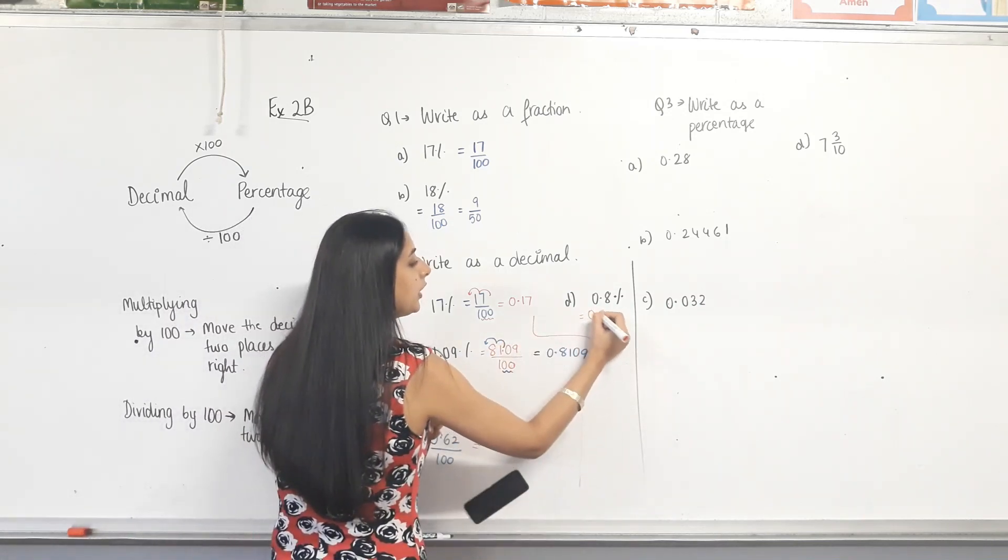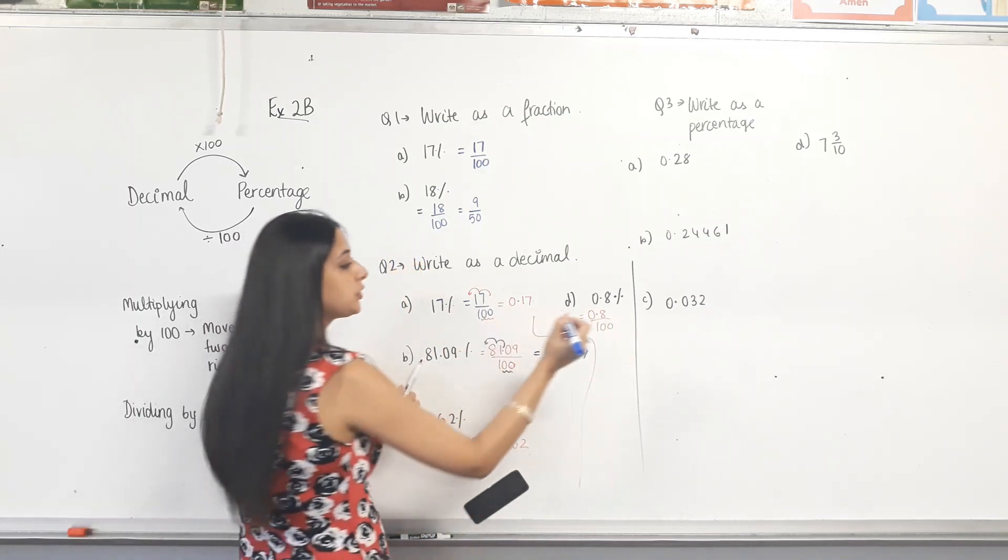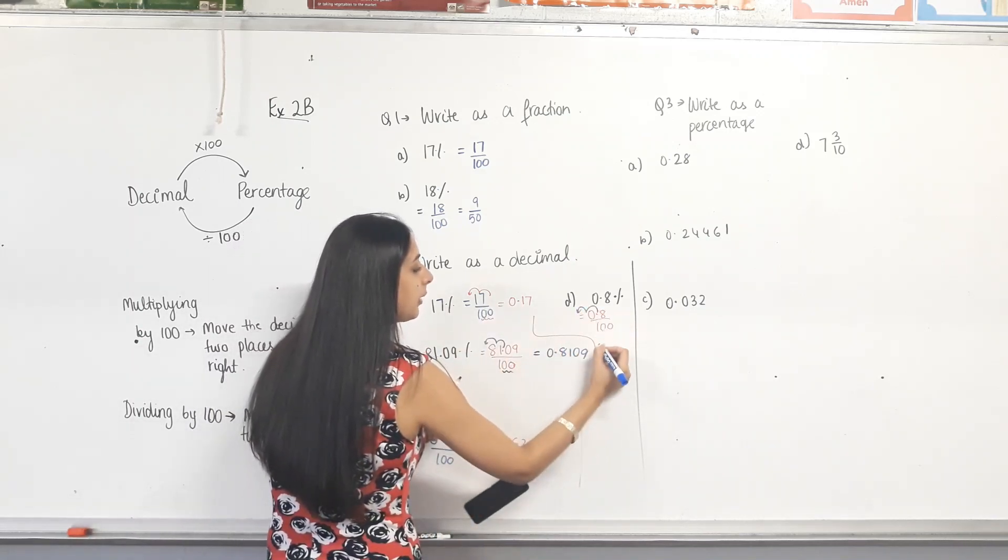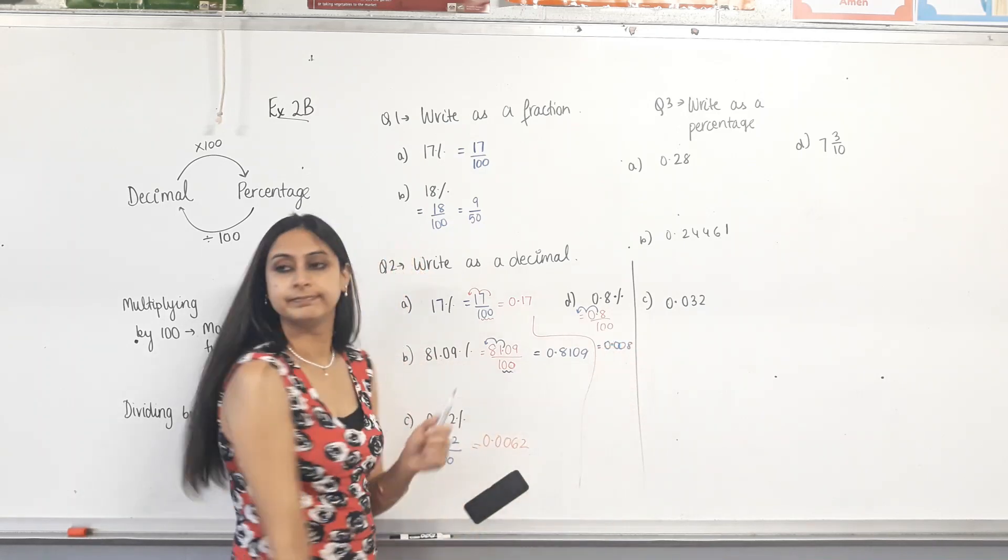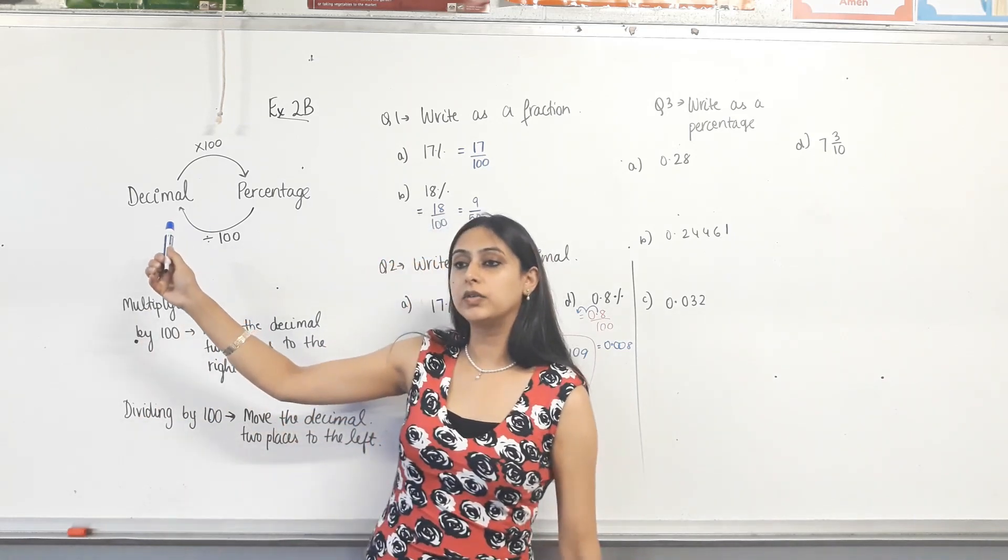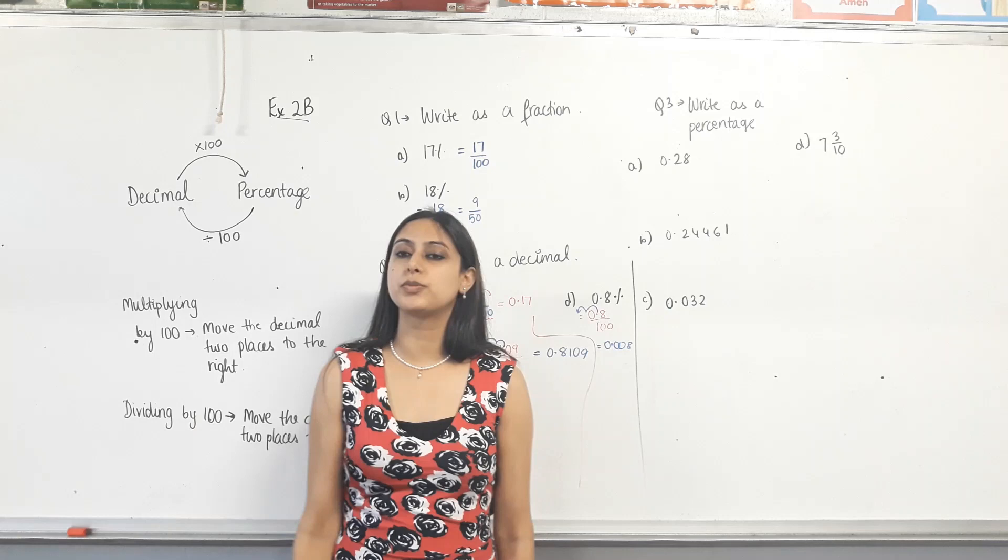That's why we did decimals before we did percentages. Now, 0.8 percent. 0.8 over 100. Move the decimal two places to the left. Fill the gap with 0. Make sense? So we're still dividing by 100 if we're converting from a percentage. Converting to a percentage, we times by 100.